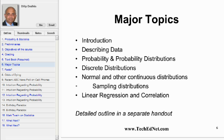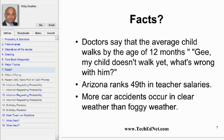The focus will be on practical applications of these concepts. Look at these three statements. Let us start with the first one. Doctors say that the average child walks by the age of twelve months. My child doesn't walk yet — what's wrong with him? Nothing. That's just on an average. Approximately half the children will walk before twelve months and the other half after. So if your child is in the other half, no problem.